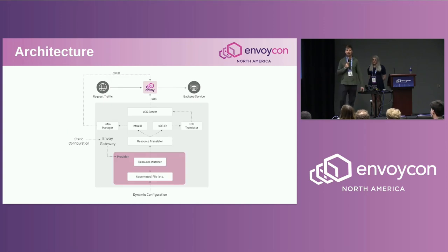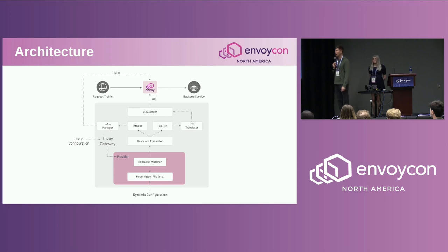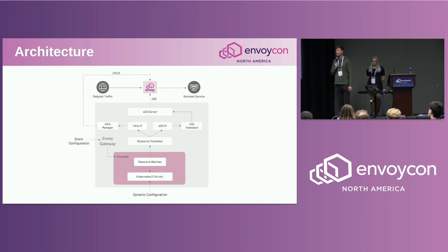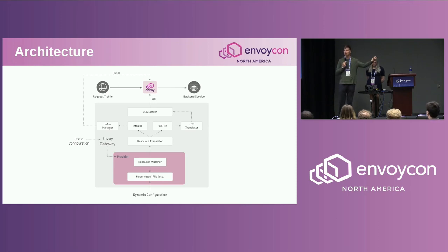Let's dive into Envoy Gateway a bit deeper. Envoy Gateway is comprised of a few things. First, there is a provider — currently the only provider supported is the Kubernetes provider. A provider is responsible for watching the resources, the dynamic configuration. Those Gateway API resources in a Kubernetes provider reside in a Kube API server. When you start Envoy Gateway with a Kube provider, it uses a Kubernetes client — specifically the controller-runtime client — to communicate with the Kube API server to watch those resources.